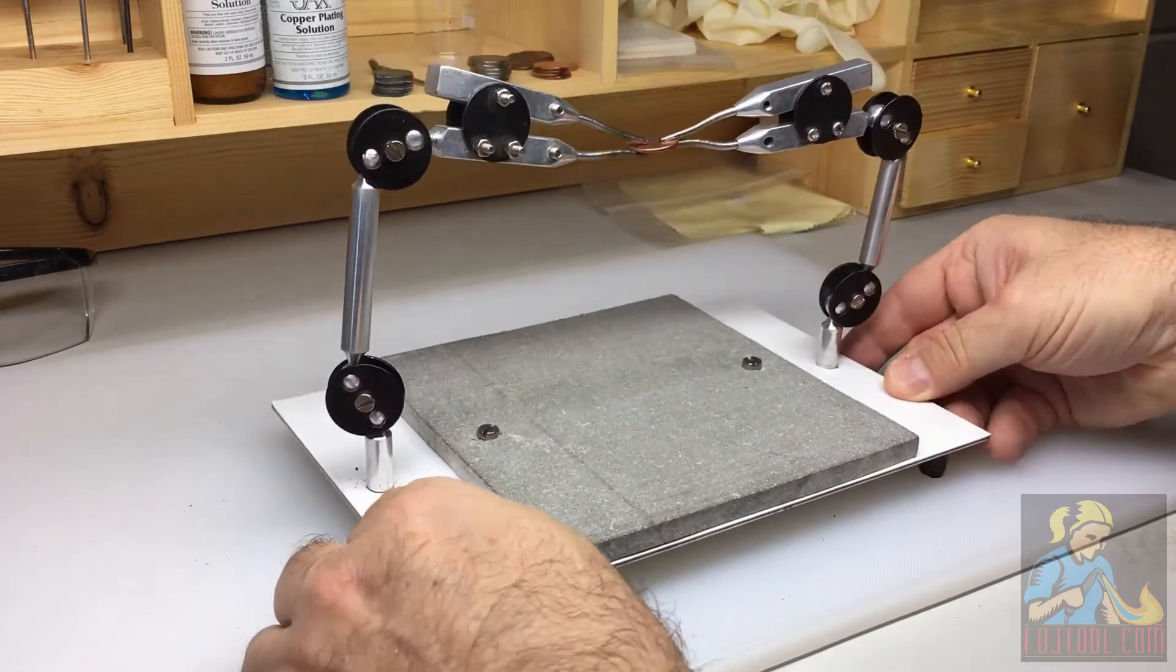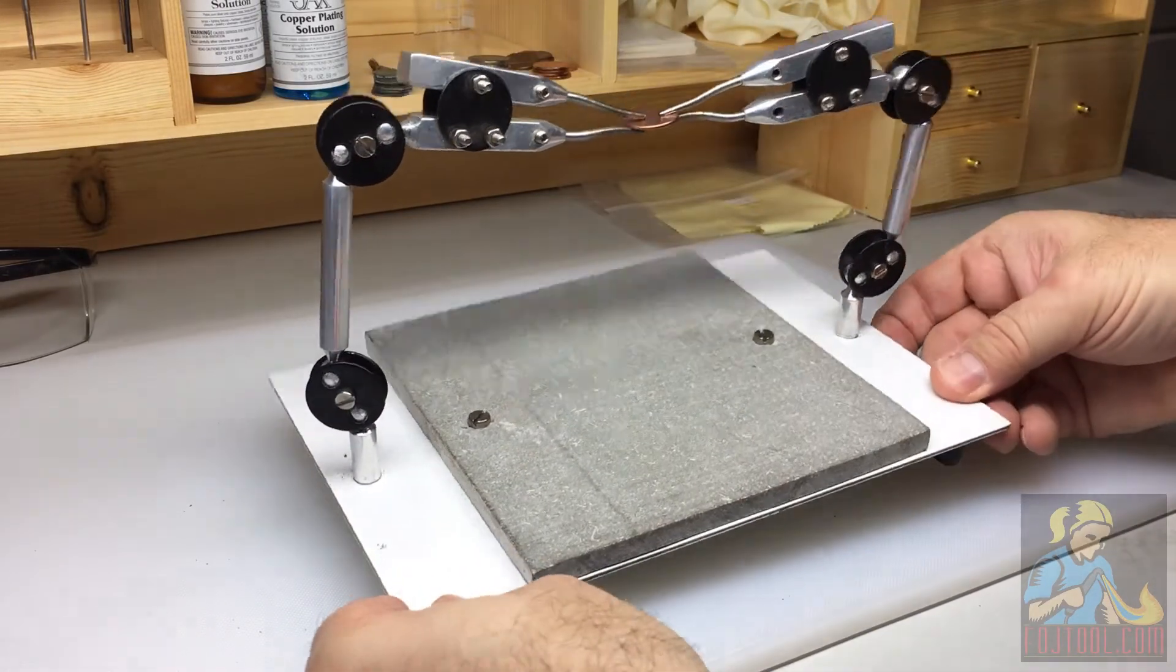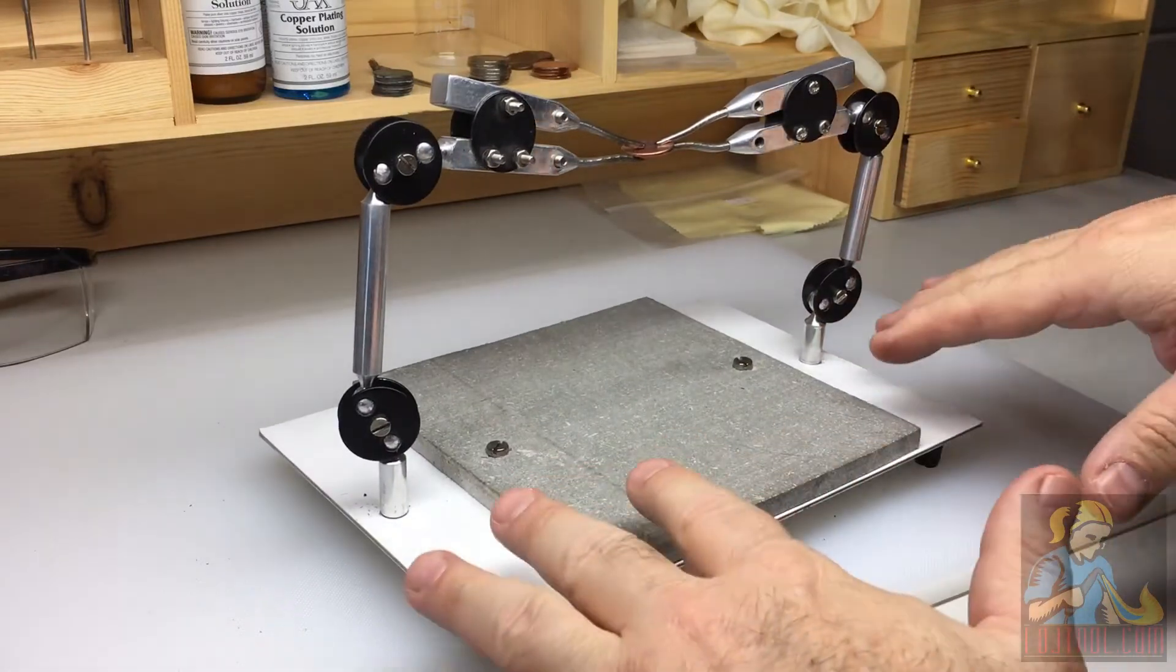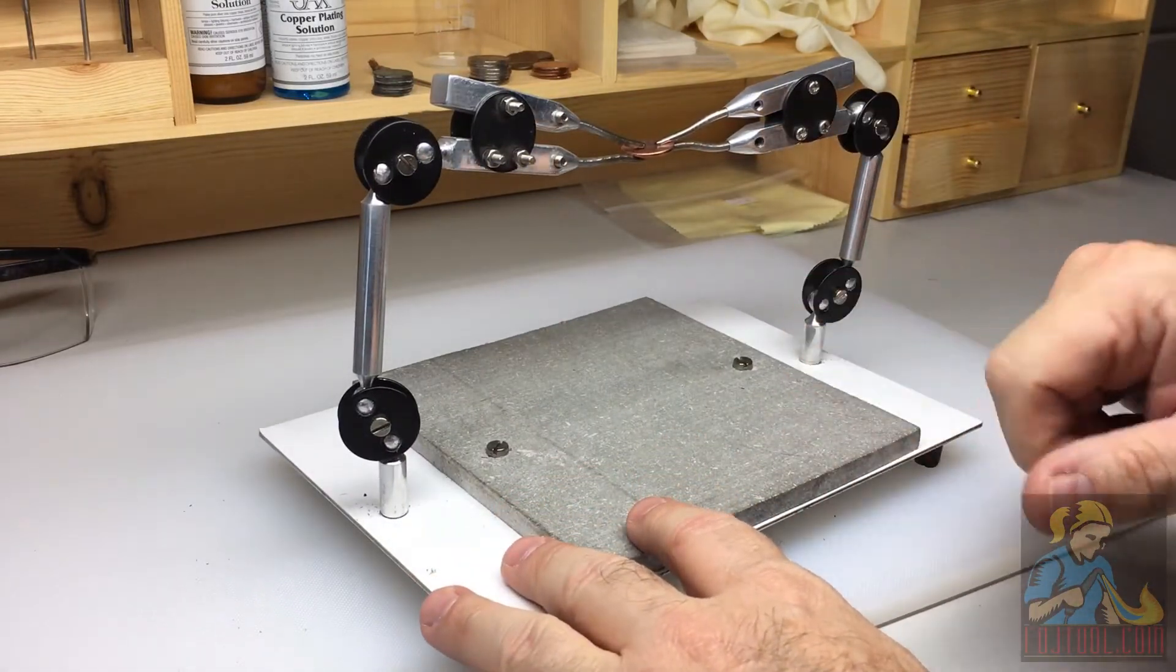So there you have it, the Economy Dual Third Hand Soldering Station. You can find this awesome tool and a whole bunch more on our website fdjtool.com.